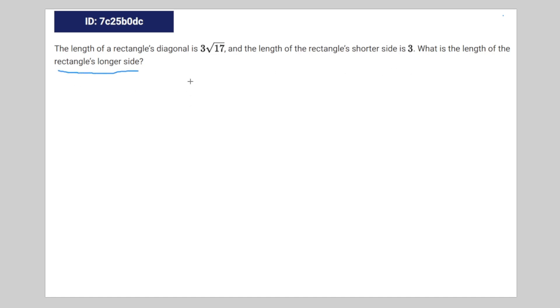So I think we're going to draw a rectangle. And then 3 times the square root of 17 for the diagonal and then 3 for the shorter side. So it's a right triangle.